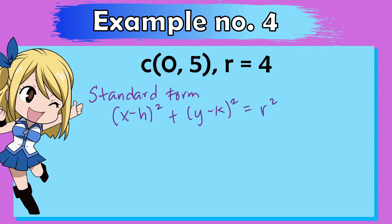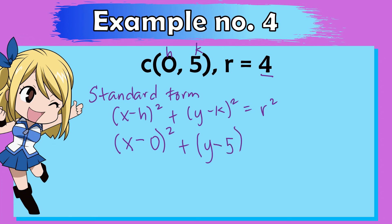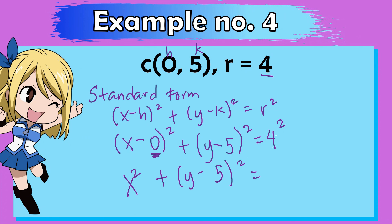The first thing we need to do is determine the standard form first. Recall: (x minus h) squared plus (y minus k) squared equals r squared. With center (0, 5), h is 0 and k is 5. Plugging in and inverting the signs: x minus 0 squared plus y minus 5 squared equals 4 squared. Since h is 0, the x term simplifies to just x squared. So the standard form is x squared plus (y minus 5) squared equals 16.